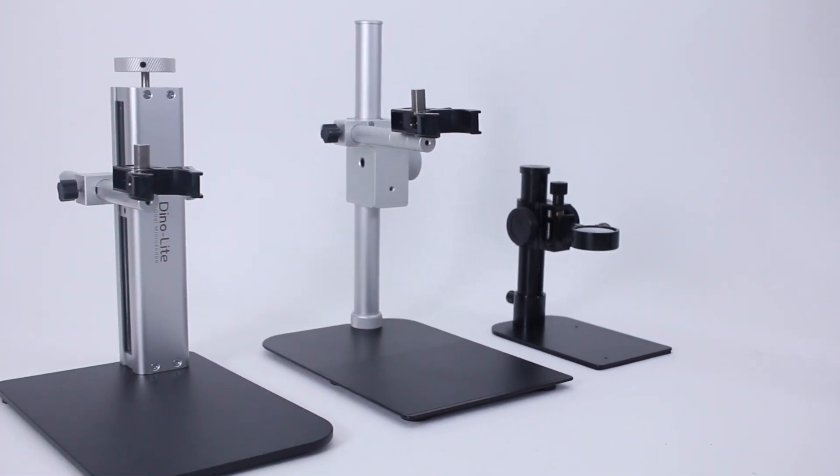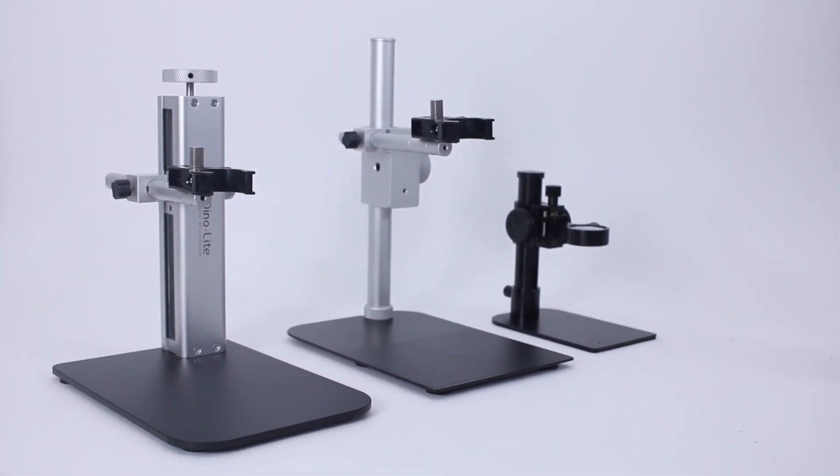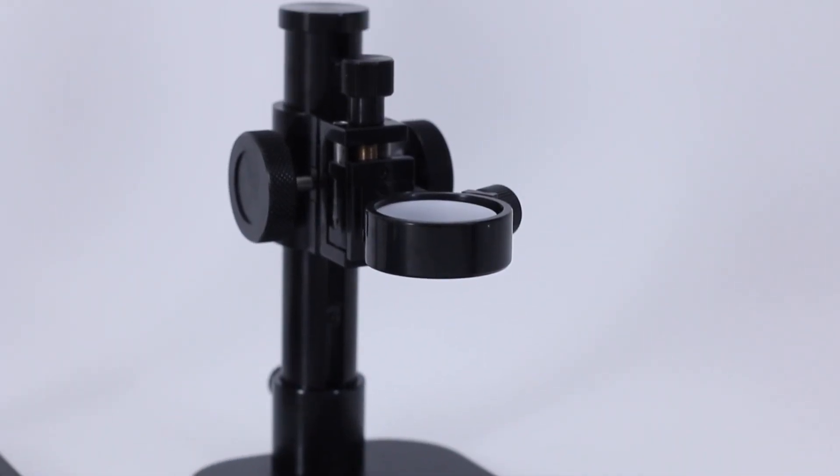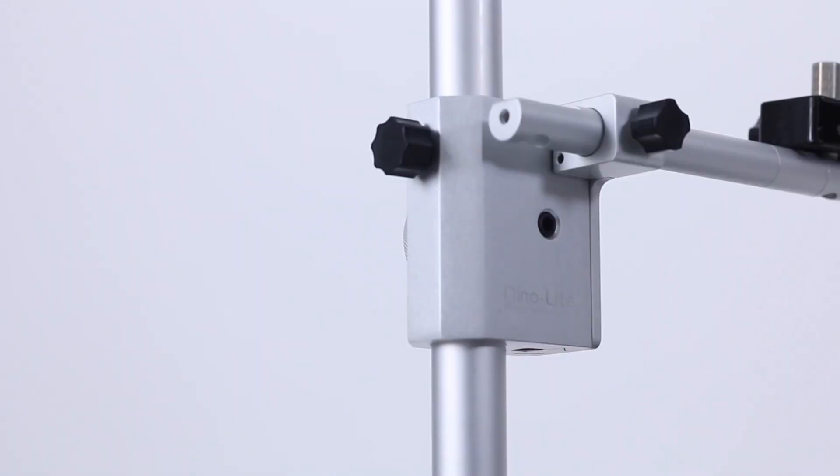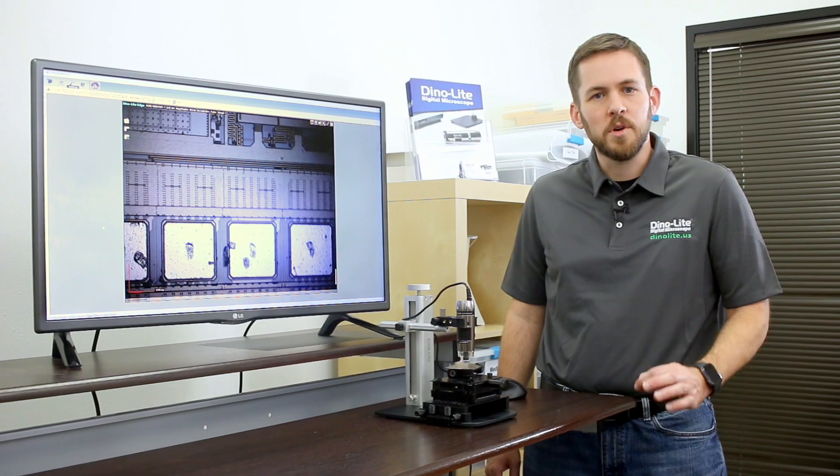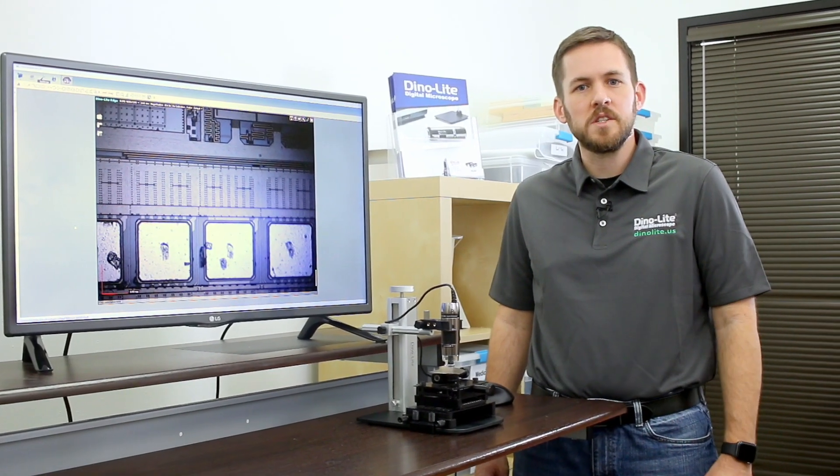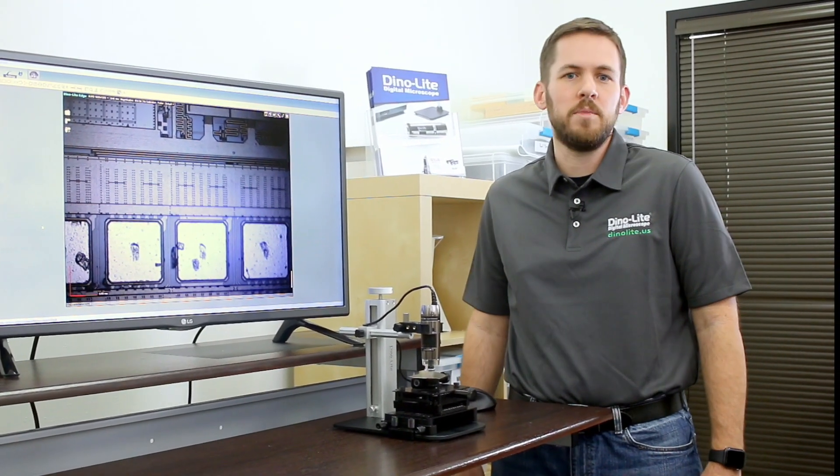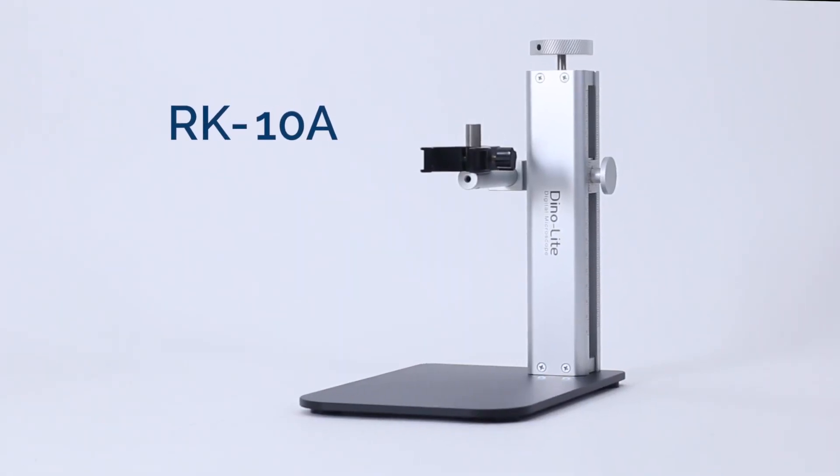One of the best things you can do is use a stable stand. Our portable and flexible stands may not provide enough stability for your high magnification Dynolite. For the most versatility in positioning, specimen size, and compatibility with accessories, I recommend this RK10A stand.